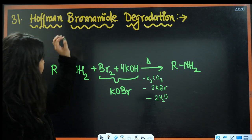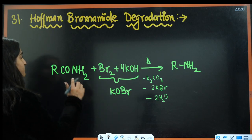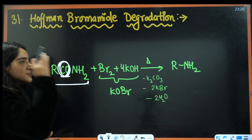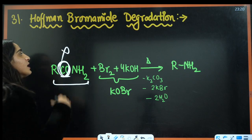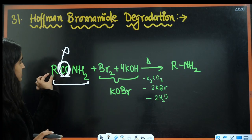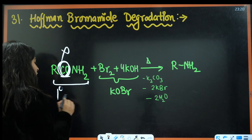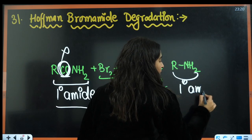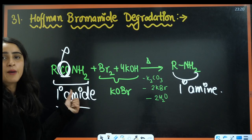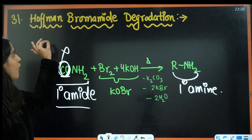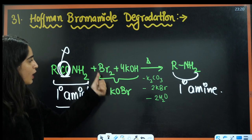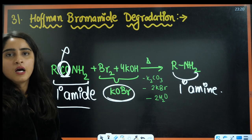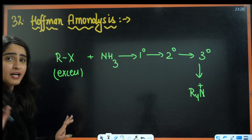Next is Hofmann bromamide degradation. We have RCONH₂ (amide) — the CO will be gone — giving 1° amine (RNH₂). This is only for 1° amide converting to 1° amine. Reagents used are Br₂ and KOH, or KOBr. A very direct and important question. Hofmann exhaustive methylation can be asked through examples: RX reacts with NH₃ to form 1° amine, then 2°, then 3°, then quaternary salt.